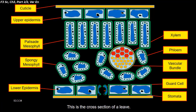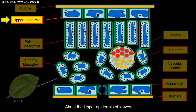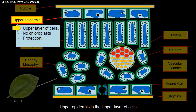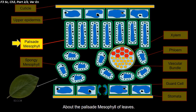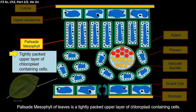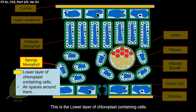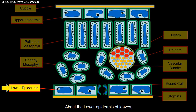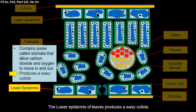In the cross section of a leaf: the cuticle is the waxy waterproofing layer on the upper surface. The upper epidermis is the upper layer of cells containing no chloroplasts, forming a protective layer. The palisade mesophyll is a tightly packed upper layer of chloroplast-containing cells. The spongy mesophyll is the lower layer of chloroplast-containing cells, with air spaces around them.